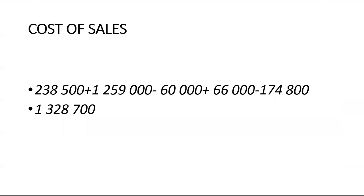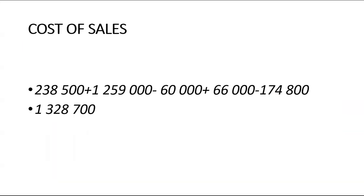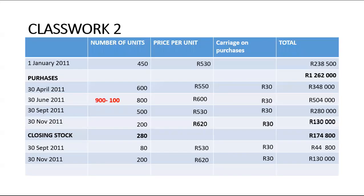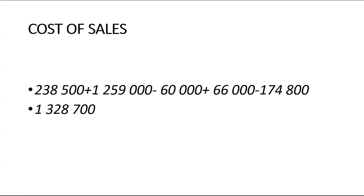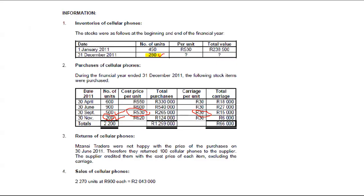When you calculate cost of sales, take the value of your opening stock of $238,500, plus purchases of $1,259,000, minus returns of $60,000, and add carriage on purchases. Then subtract the value of your closing stock determined in the previous slide. The cost of sales figure is $1,328,700. That $66,000 represents carriage on purchases, and the $1,259,000 — taken from the table — represents your total purchases for the year.